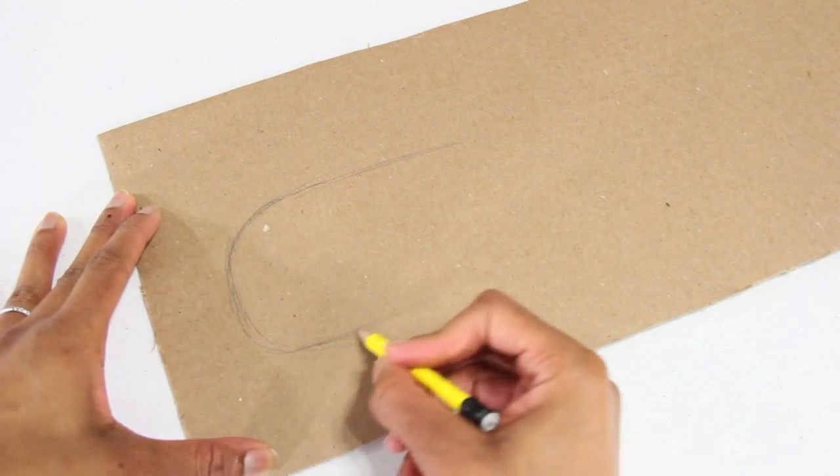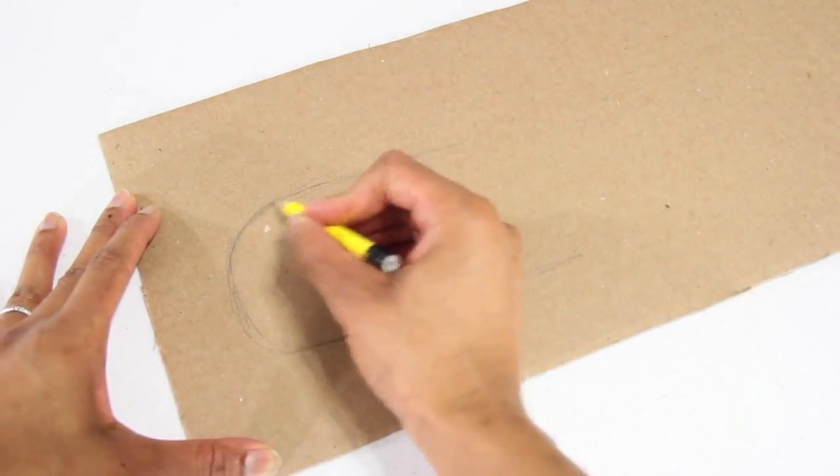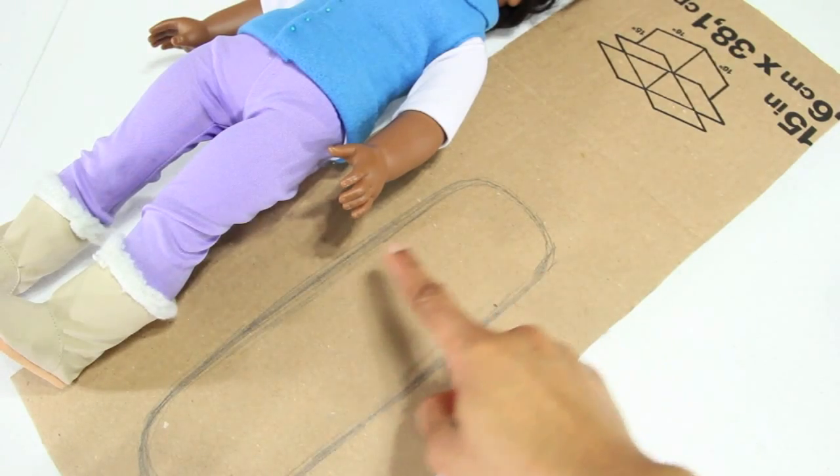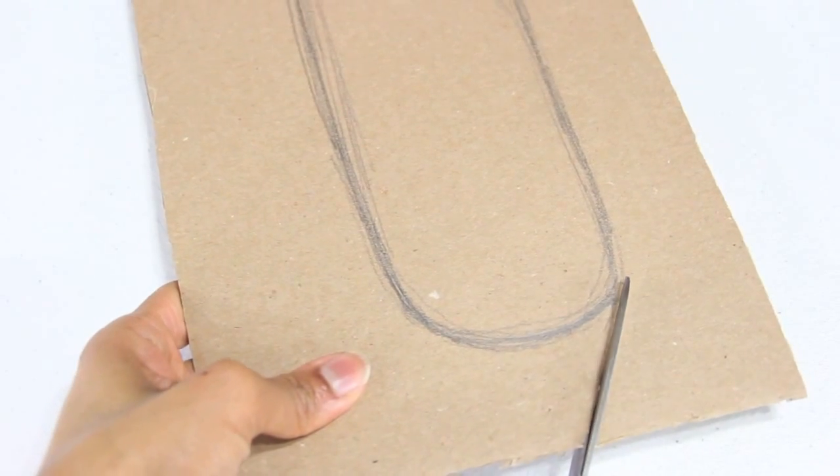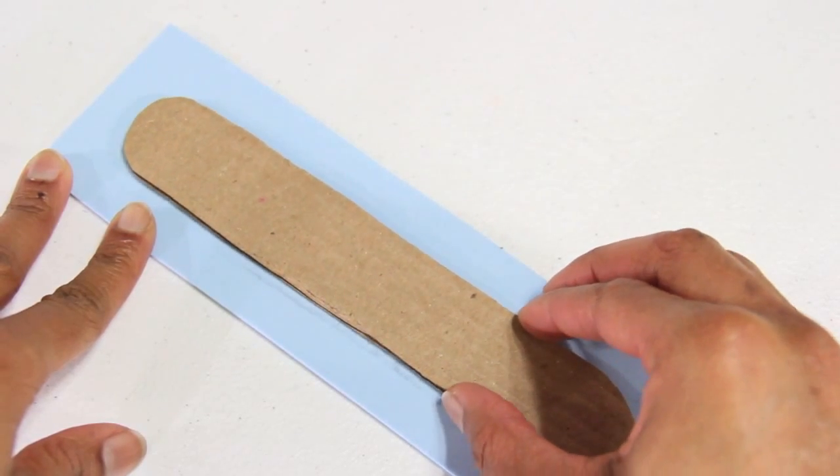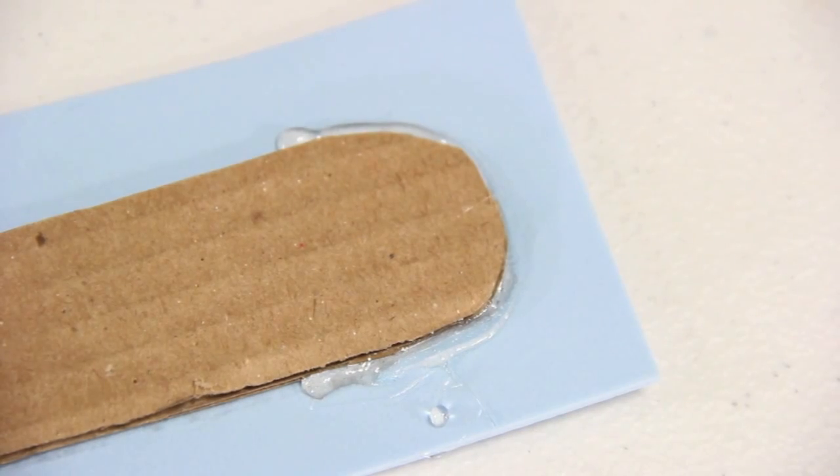I drew a board that came to about the middle of my doll's arm. I cut it out and glue the cardboard onto a piece of craft foam. I apply a line of glue around the edges.